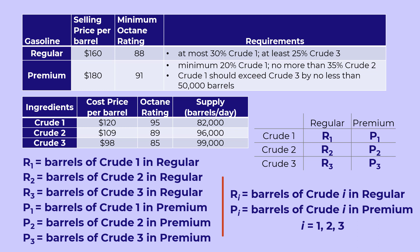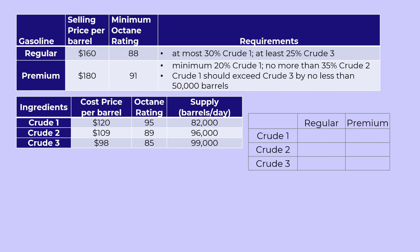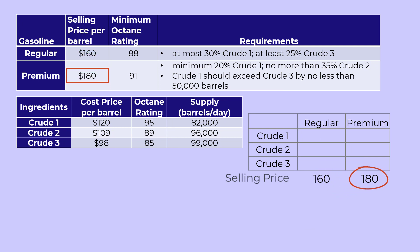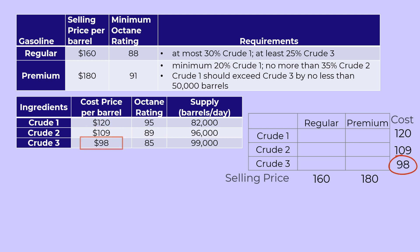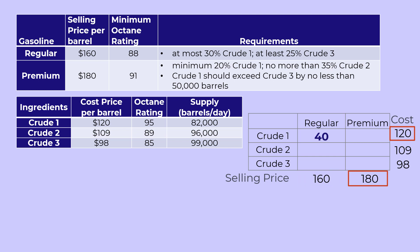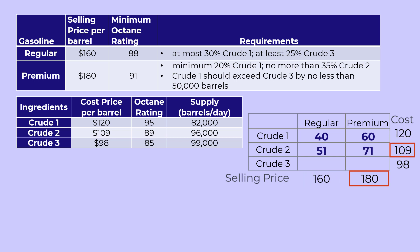The objective is to maximize profit, which we obtain by subtracting the costs from the selling prices. We have $160 selling price for regular and $180 for premium per barrel. The costs are $120, $109, and $98 respectively for the crudes. The profit from each barrel of crude 1 in regular is 160 minus 120, which gives 40. For crude 1 in premium, it is 180 minus 120, which gives 60. Similarly, we have 51 for R2, 71 for P2, 62 for R3, and 82 for P3.